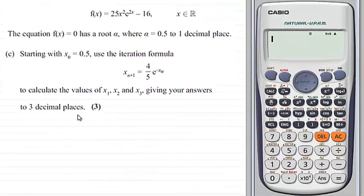Hi there. Now for this question, we're given that f(x) equals 25x² times e to the 2x minus 16, where x is any real number.